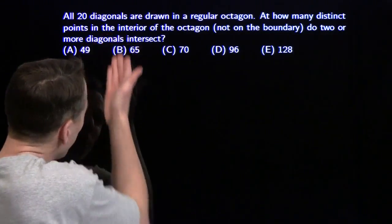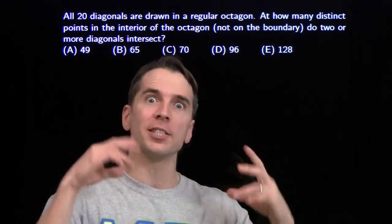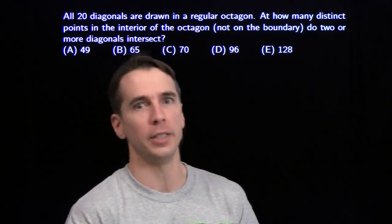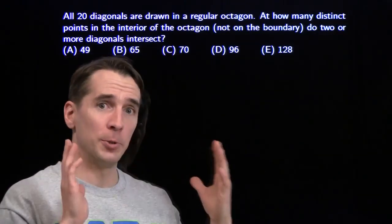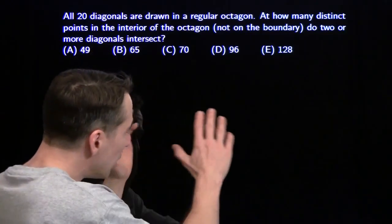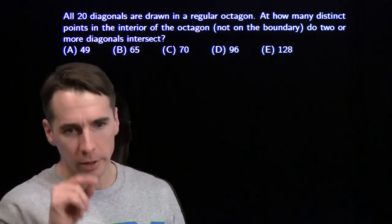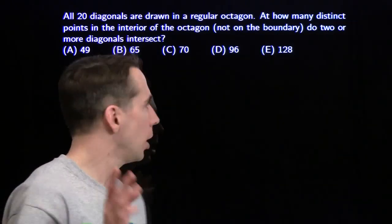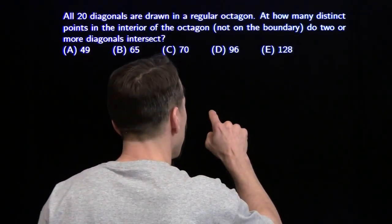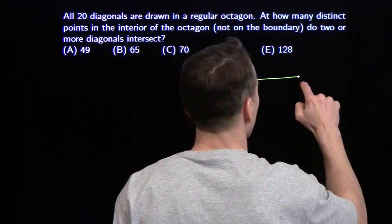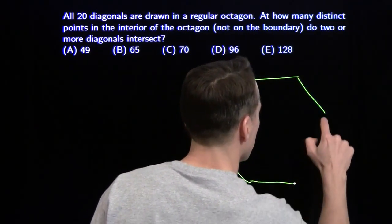In this problem, we're starting off with all 20 diagonals of a regular octagon. Then we're going to count up all the points inside that octagon where at least two of these diagonals meet. Now if you're a lot better at drawing and a lot more patient than I am, you could draw the octagon very carefully, draw all the diagonals, and then count up all the intersection points inside. We're not going to do that, but we are going to start with a quick sketch of an octagon that you'll have to pretend is regular.